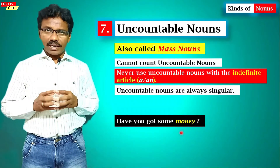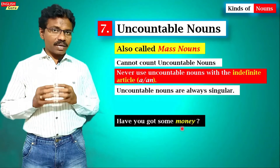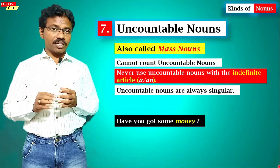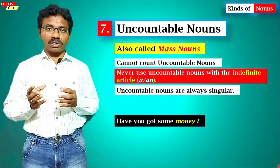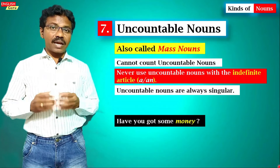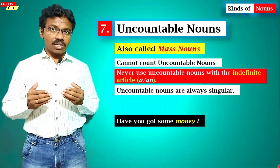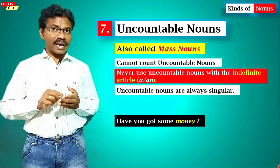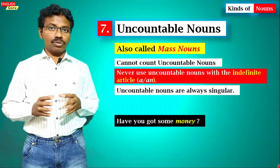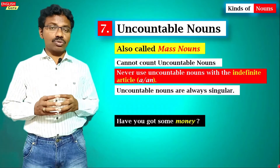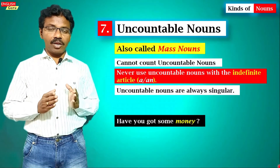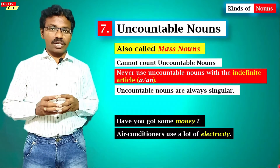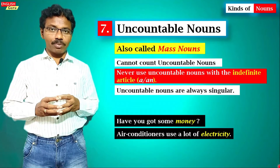For example: Have you got some money? The word money is singular. There is no 'monies' — we can't make it plural, so it is an uncountable noun. You cannot say 'a money' or 'an money.' You cannot use the indefinite article a or an before money. That is very important.